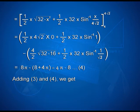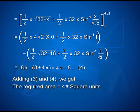Adding the two parts, the required area is 8 + (4π − 8) = 4π square units.